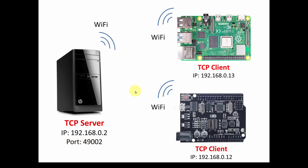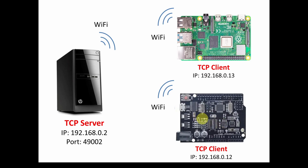Welcome back. Today we're going to start a brand new series. What I've got here are a few devices communicating over a Wi-Fi Ethernet connection, and we're going to show you how to set this up. We've got a desktop computer, a Raspberry Pi, and an Arduino. The Raspberry Pi and Arduino have built-in Wi-Fi chips that allow them to communicate over Wi-Fi, so you don't need any USB connections.